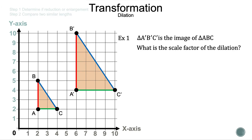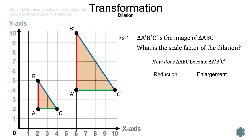Now let's read the question. Triangle A'B'C' is the image of triangle ABC. What is the scale factor of the dilation? The first question we need to ask is: how does triangle ABC become triangle A'B'C'? Is it a reduction — smaller — or is it an enlargement — bigger? If we take a look at the graph, the image has become bigger, so we can circle enlargement.